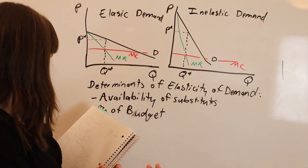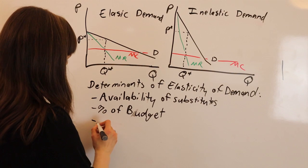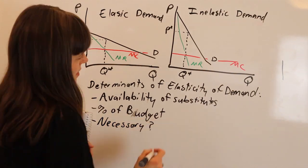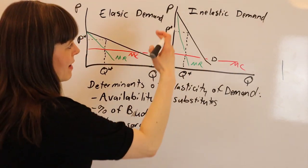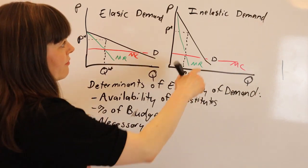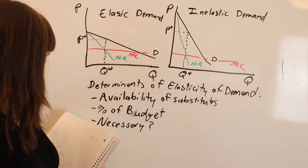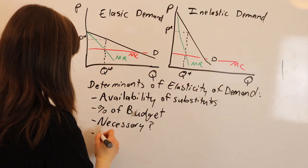So the percentage of your budget matters, how necessary it is. Things that are really necessary, like medicine, are going to have a very inelastic demand. And, of course, expectations.